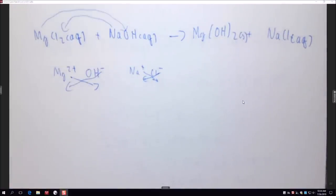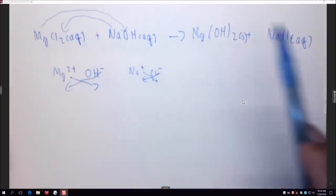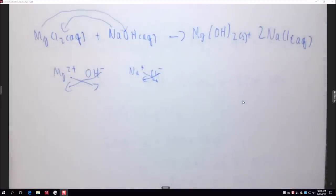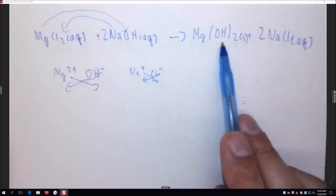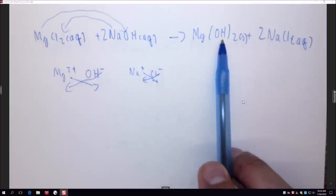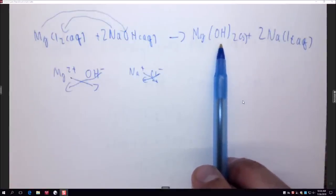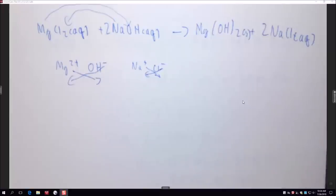Balancing the equation: we have 1 magnesium on each side, but 2 chlorides on the left and only 1 on the right, so we need 2 NaCl on the right. That gives 2 sodiums on the right, so we need 2 NaOH on the left, and the 2 hydroxides balance. When balancing with polyatomic ions, it's easier to consider the whole ion. For the sodium hydroxide solution, you can use the stock solution directly — no dilution needed. Specifically, use 3.5 milliliters of 5.0 molar NaOH.